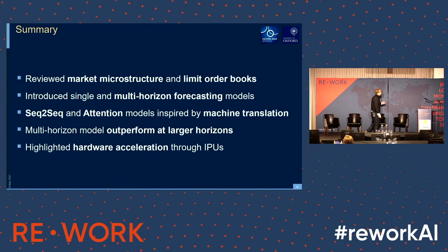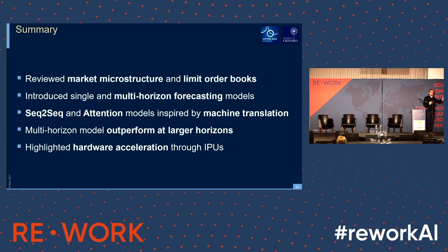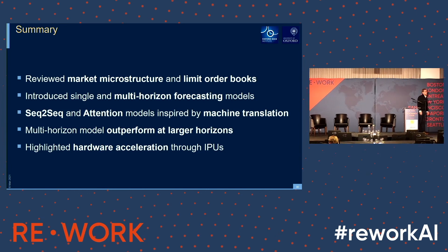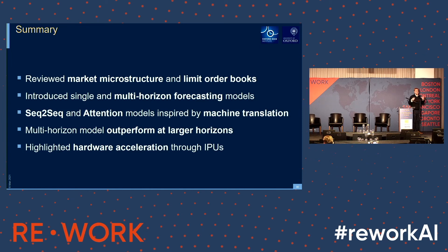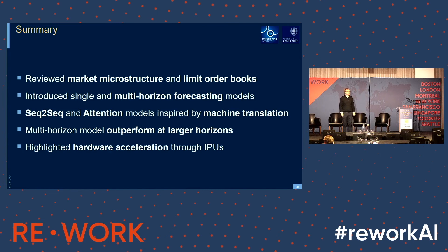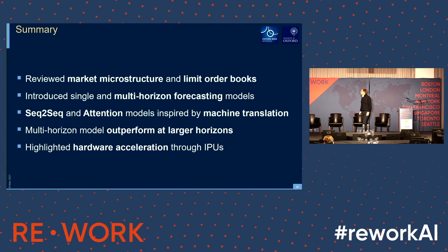Just to summarize: we reviewed market microstructure and limit order books, and we've seen how we can build forecasting models for single horizon and multi-horizon models utilizing sequence-to-sequence and attention mechanisms. We saw that at larger horizons, those multi-horizon models outperformed the single horizon models. We also saw how we can utilize interesting new hardware and see how it provides benefits at least at the training stage.